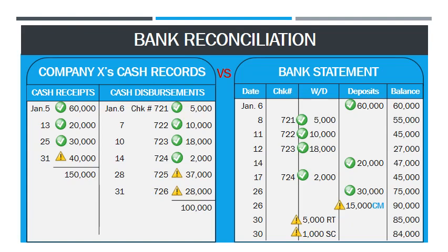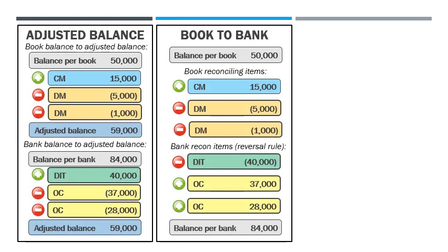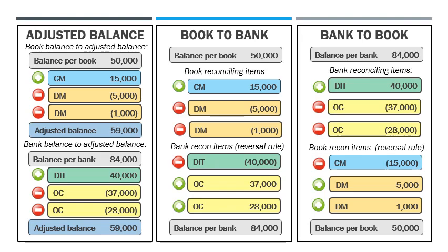Going back to our illustration, we can now identify the book and bank reconciling items. For the book reconciling items, we have $15,000 as a credit memo and $5,000 and $1,000 as debit memos. For the bank reconciling items, we have $40,000 as deposit in transit and $37,000 and $28,000 as outstanding checks. We plug in these reconciling items to our formulas and get the following bank reconciliations under each method. You can pause the video to refer to your notes if you need more time to review the solutions.